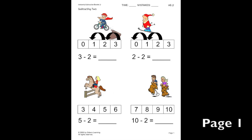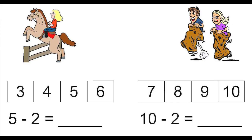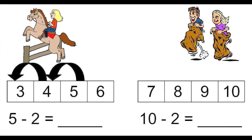On this first page, we will learn how to subtract 2. Let's look at the bottom of this page. On the first problem, we have 5 minus 2. To subtract 2, think about what is 2 numbers before. So, what is 2 numbers before 5? Well, 4 is 1 number before 5, and 3 is 2 numbers before 5. So, 3 is 2 numbers before 5, meaning 5 minus 2 equals 3.